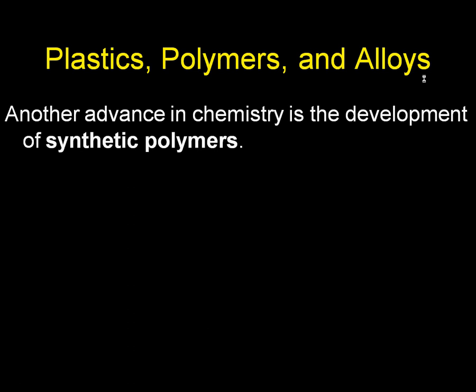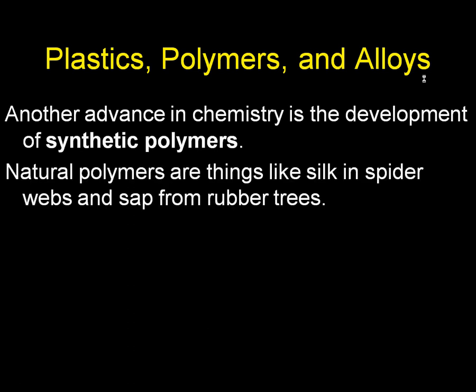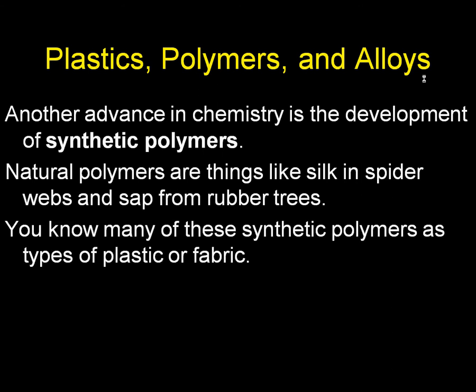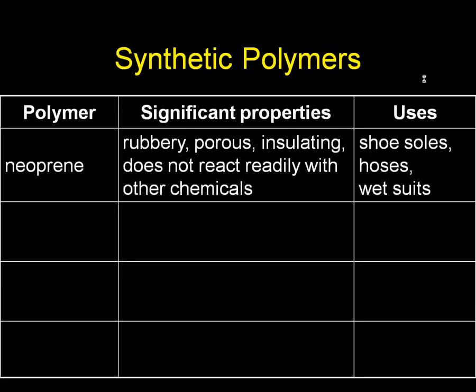Another advance in chemistry is the development of synthetic polymers. Natural polymers are things like silk and spider webs and sap from rubber trees. You know many of these synthetic polymers as types of plastic or fabric.